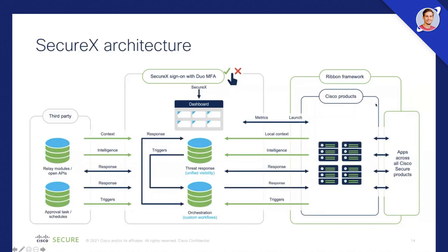If you look at SecureX, I prefer not to use marketing slides. SecureX is an architecture — it's not really a product. We actually offer it for free to customers: if you buy one Cisco security product, you get SecureX included. It's basically a platform that contains multiple features. You log in through the dashboard using Duo. You then have features like SecureX Threat Response and SecureX Orchestration — two big applications within the SecureX architecture. The orchestrator is based on Action Orchestrator, which has now been fully integrated into SecureX and is basically a low-to-no-code orchestrator.